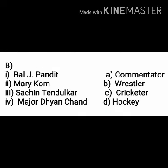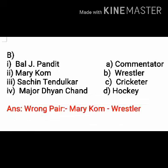Now read the second identify the wrong pair question: Bal J. Pandit — commentator; Mary Kom — wrestler; Sachin Tendulkar — cricketer; Major Dhyan Chand — hockey. Among these four, the wrong pair is Mary Kom — wrestler, because Mary Kom is a boxer, not a wrestler. Write down the wrong pair: Mary Kom dash wrestler.